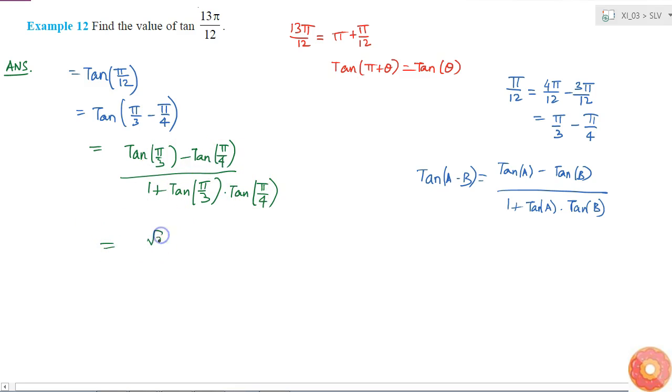Tan π by 3 is simply √3. Tan π by 4 is 1. So it is √3 minus 1 divided by 1 plus tan π by 3 is √3 into tan π by 4 is 1.